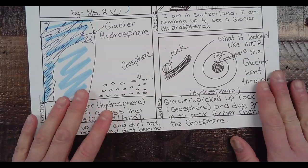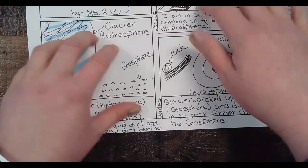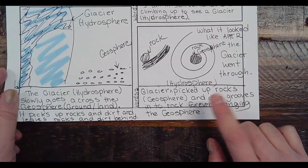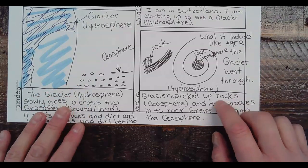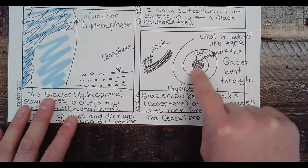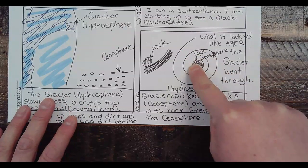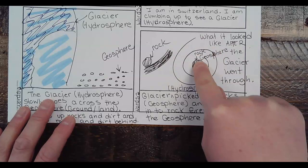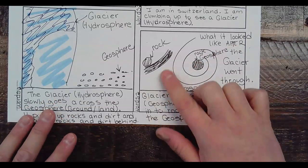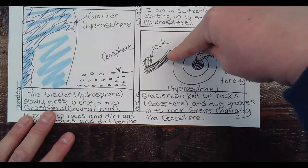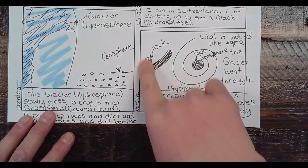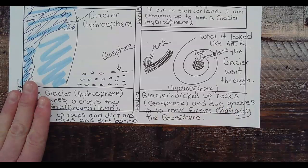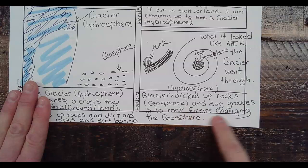The last picture — this was what I saw when I went up to the glacier. At one point we went to what might have been a museum, and it showed a corkscrew shape with a rock in it. The glacier made that corkscrew impression in the rock as it came across. Other rocks had grooves dug into them. So the glacier — the hydrosphere — picked up rocks, the geosphere, and dug grooves into rock, forever changing the geosphere.